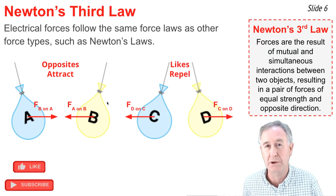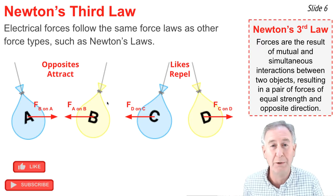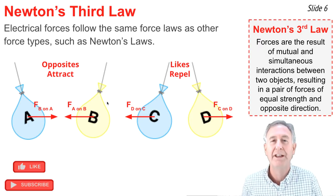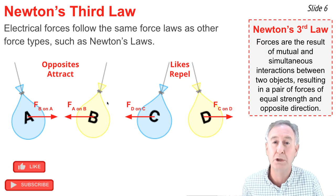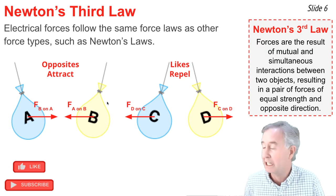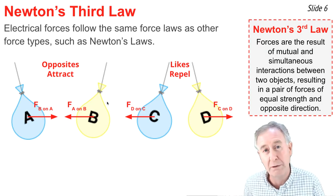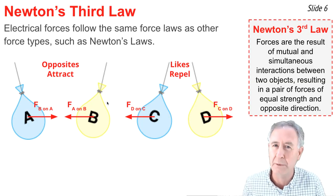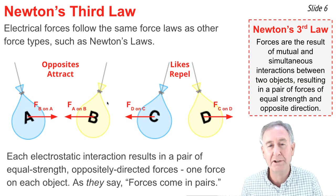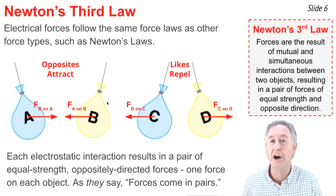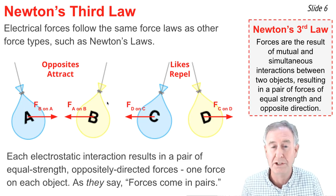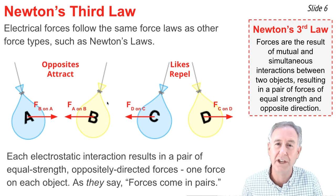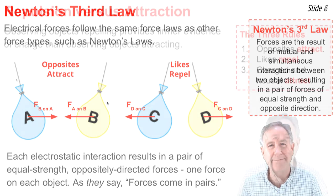The same is true of repulsive forces. When you see two balloons repelling, there are two forces involved: the force of balloon D pushing balloon C to the left, and the force of balloon C pushing balloon D to the right. Whenever there are electrostatic interactions, there are a pair of forces of equal strength in opposite directions. As we often say, forces come in pairs.